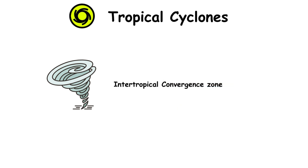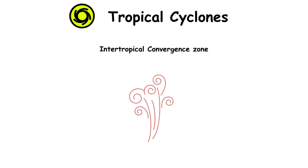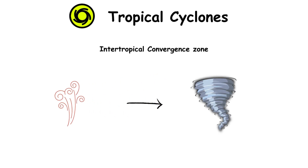Tropical cyclones mostly originate in the intertropical convergence zone, where winds blow from either the northeast or southeast. In this region, the air is heated and rises, which causes clusters of thunderstorms. This in turn creates a flow of warm, moist, rapidly rising air, which starts to rotate cyclonically as it interacts with the rotation of the earth.